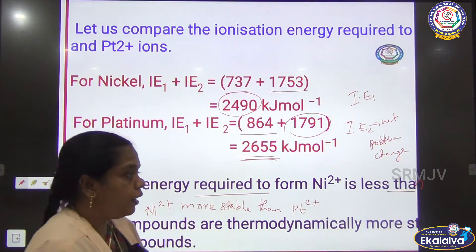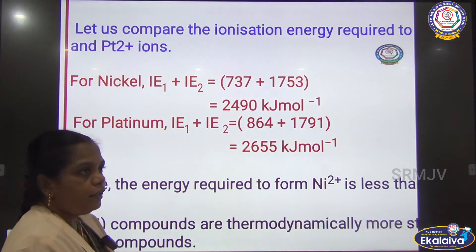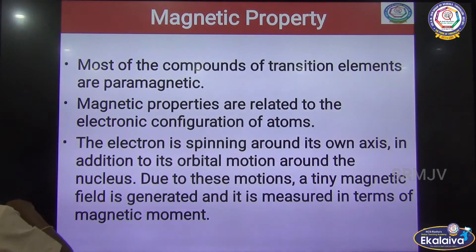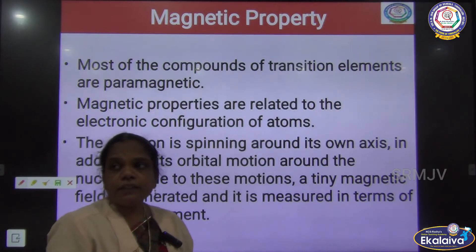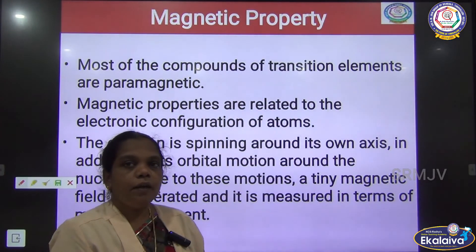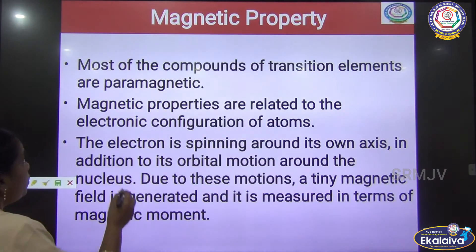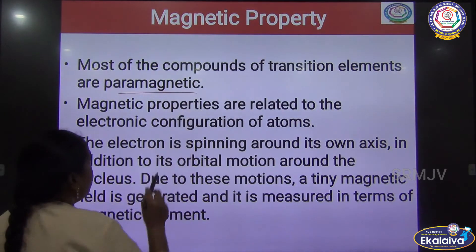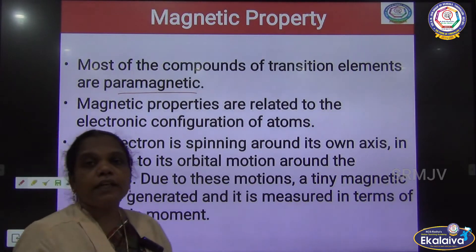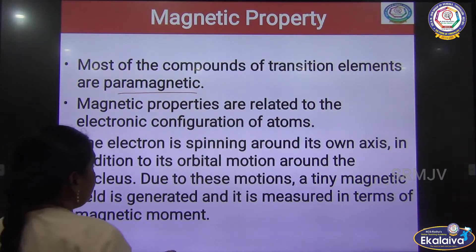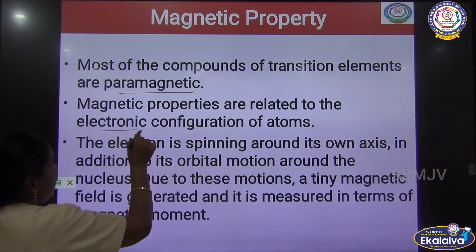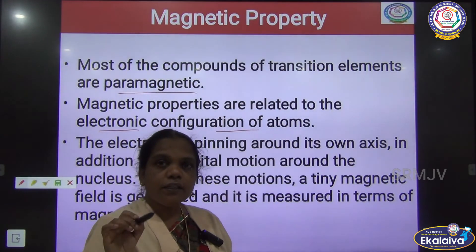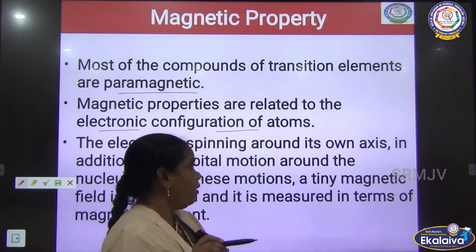These are properties of transition metals — ionization energy being one of them. The next property is the magnetic property. Almost all transition metal elements are magnetic in nature. Most compounds of transition metals are paramagnetic, and the magnetic property is related to the electronic configuration, specifically the number of unpaired electrons.